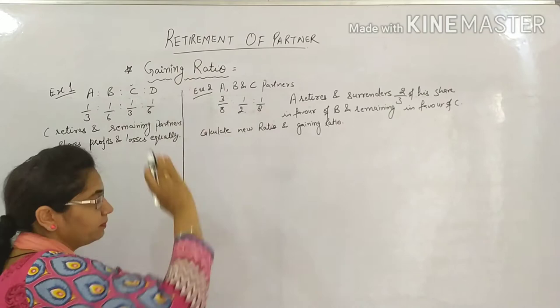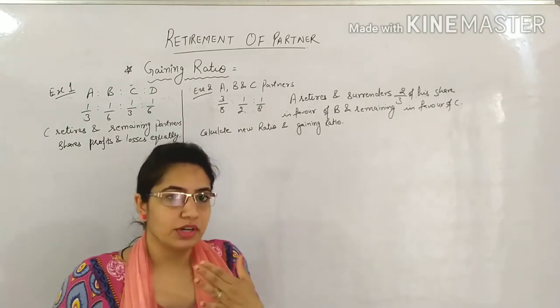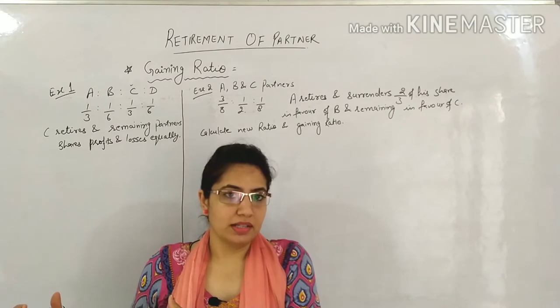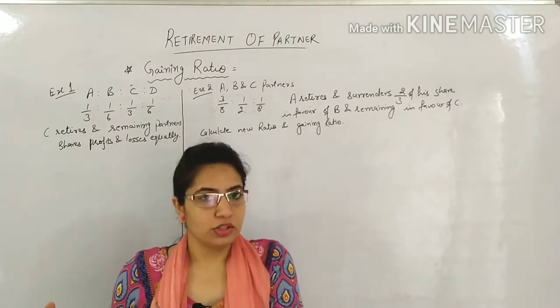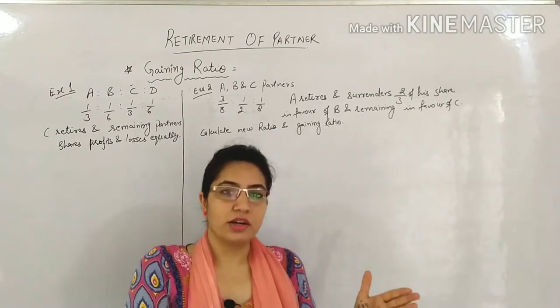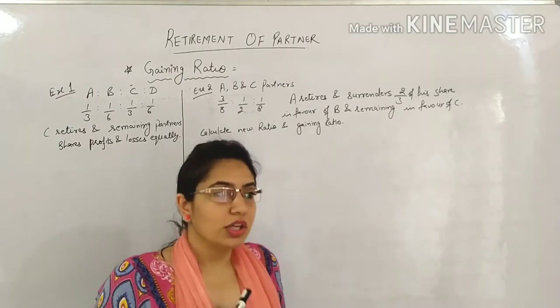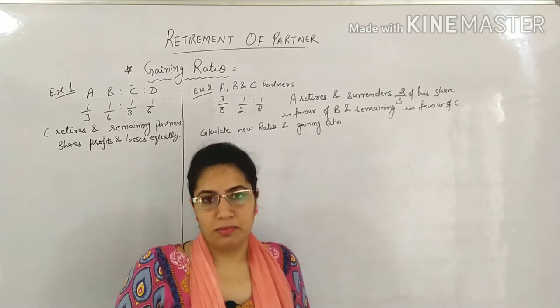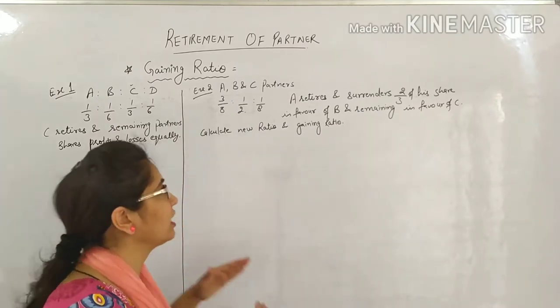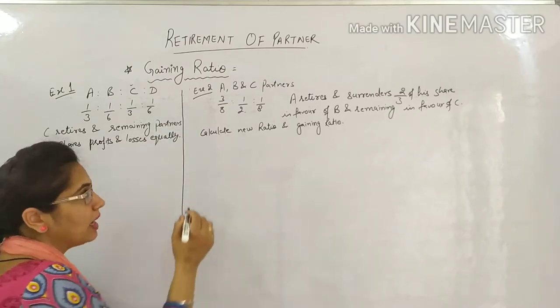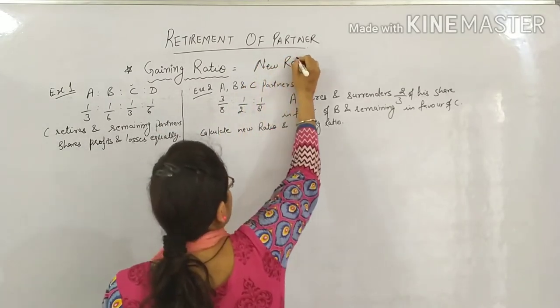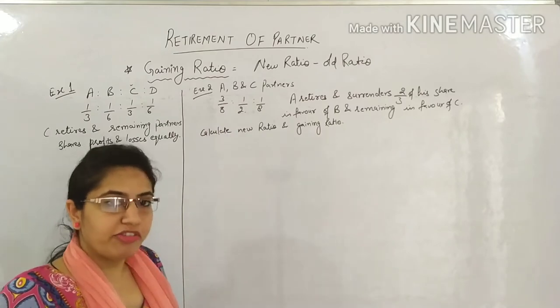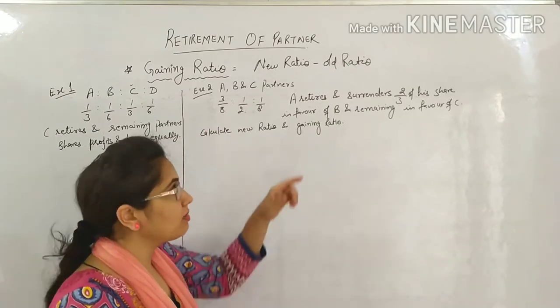What is gaining ratio? As I told you, when one partner retires from the firm, at the time of leaving that partner leaves their share for the old partners, meaning the remaining partners, and in return takes some share of goodwill, reserves or revaluation. So gaining ratio is when one partner retires, how much gain the remaining partners get, meaning how much benefit they get. Because when they leave their share, they give some benefit. So to calculate gaining ratio, our formula is new ratio minus old ratio. This is because gain means profit, profit means benefit to you, you only benefit when your new ratio is higher.